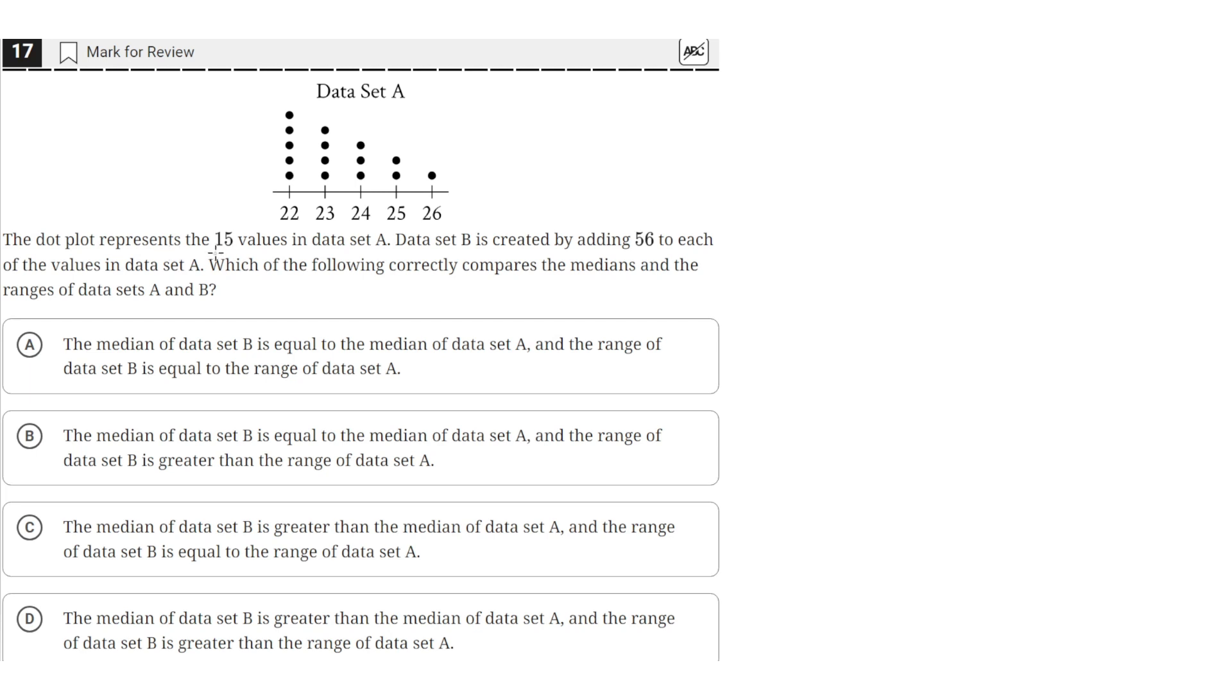The dot plot represents the 15 values in data set A. Data set B is created by adding 56 to each of the values in the data set. Which of the following correctly compares the medians and the ranges of data sets A and B? So this is data set A. It goes from values 22 to 26.